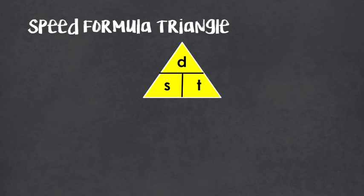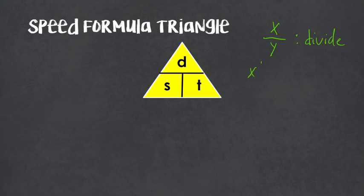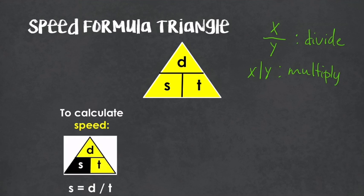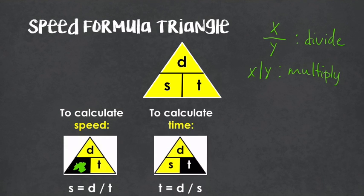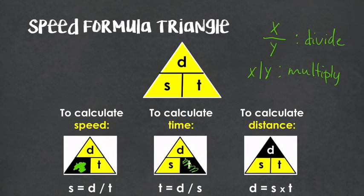To help you remember the speed formula, we have a little triangle. Anytime one variable is on top of another variable, that means divide. If a variable is next to another variable, that means multiply. Cross out whichever variable you are looking for. If we're looking for speed, distance is on top of time, so we divide distance by time. If we're calculating time, divide distance by speed. If we're calculating distance, multiply speed times time.